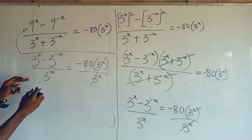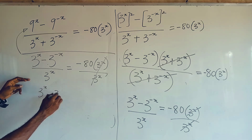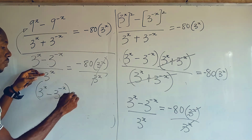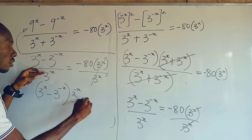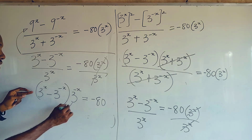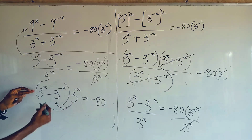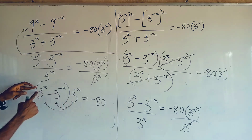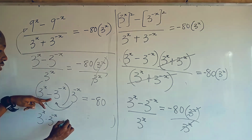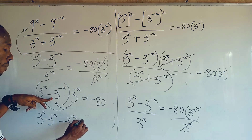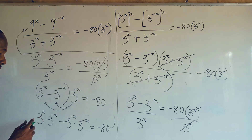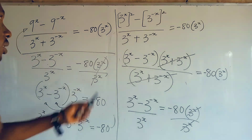I'm left with 3 to the power of x minus 3 to the power of minus x in brackets. By the law of indices, dividing by 3 to the power of x means the second term becomes 3 to the power of minus x — equal to minus 80. If I distribute, I have 3 to the power of x times 3 to the power of minus x, minus 3 to the power of minus x times 3 to the power of minus x, equal to minus 80.